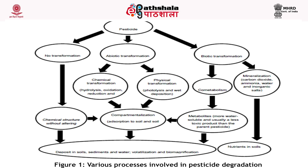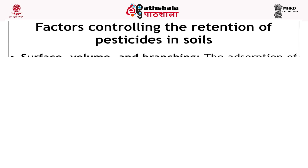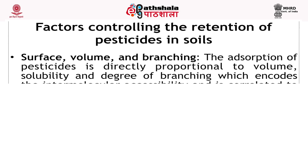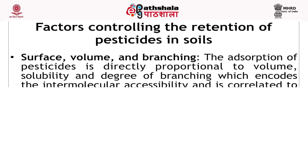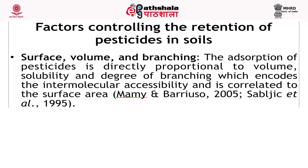Figure 36.1 shows the process involved in pesticide degradation. Next, factors controlling the retention of pesticide in soil. The physicochemical properties of pesticide control their retention in the soil. First is surface volume and branching: the adsorption of pesticide is directly proportional to the volume, solubility and degree of branching, which encodes the intermolecular accessibility and is correlated to the surface area.